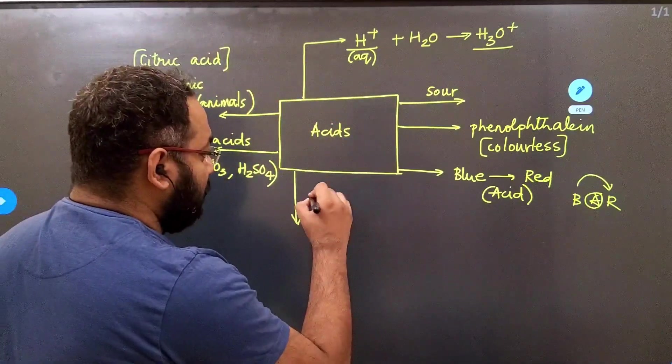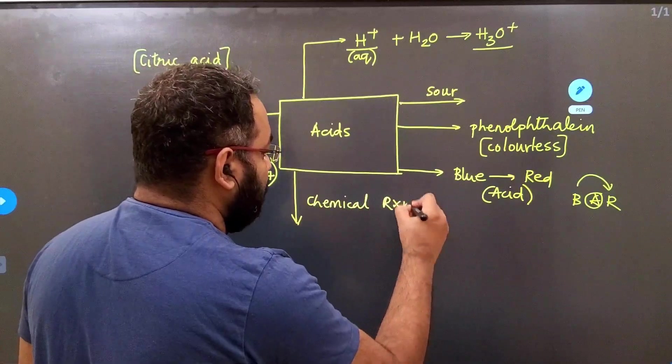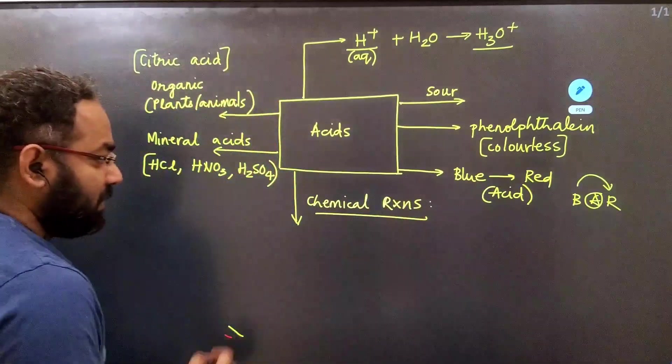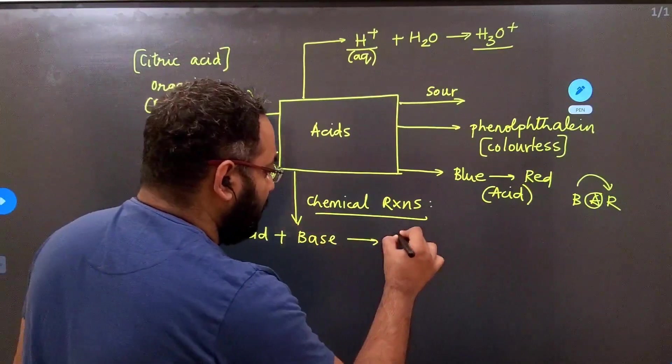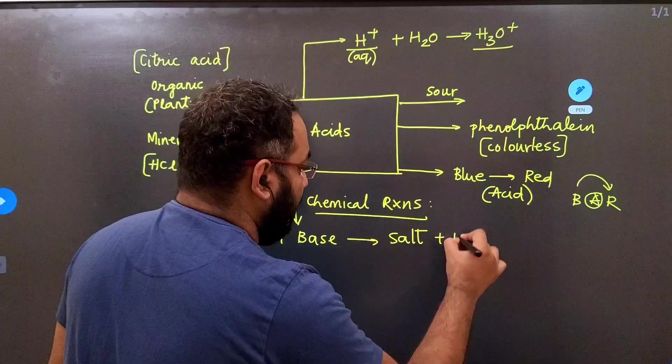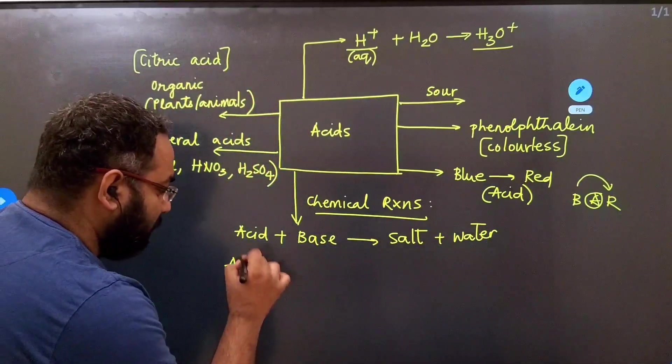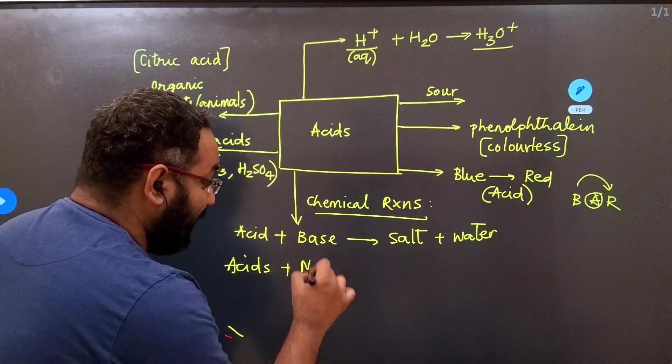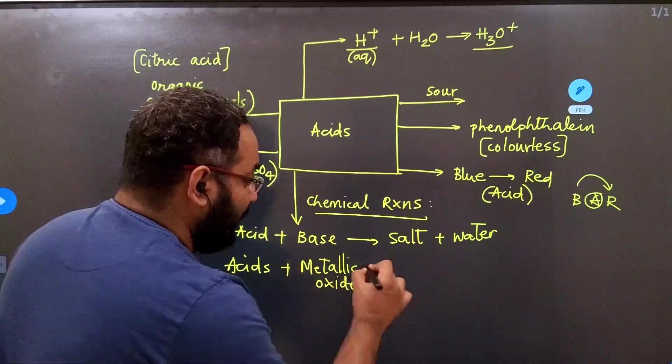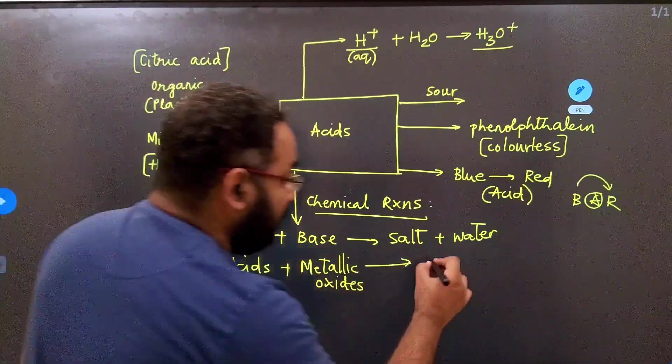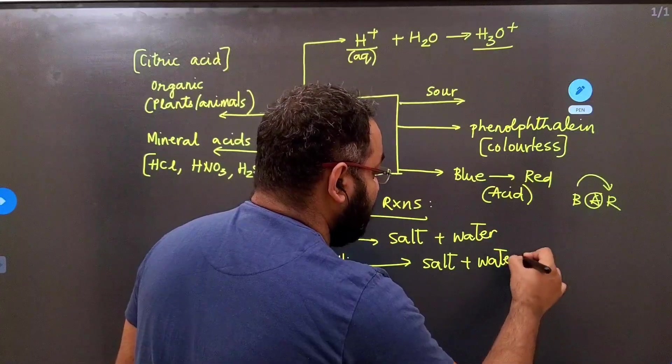Then let us look at all the chemical properties of acids or the chemical reactions we know. The first thing that we need to understand is when acids combine with bases, they give us salt plus water. When acids combine with metallic oxides, now metallic oxides are also basic in nature, they also produce salt plus water. And we know these two reactions are called as neutralization reactions.